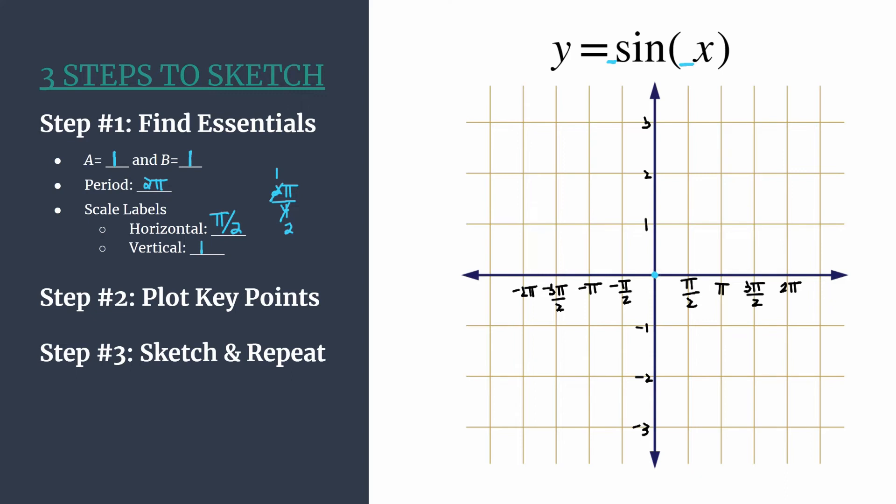Then we move to the next horizontal tick mark. Our next point should be a maximum for this graph, the highest point, and it happens at pi over two comma one. We know our next point should be another zero or x-intercept, so that happens at pi comma zero. And our final point of the pattern should be a minimum at the next horizontal tick mark over, so three pi over two comma negative one. We have plotted one pattern or what will give us one horizontal cycle.